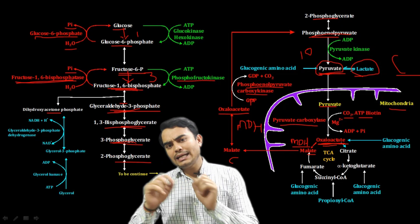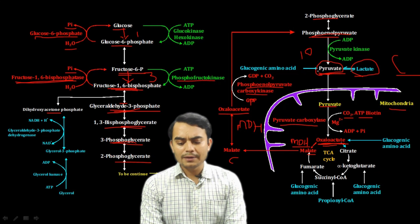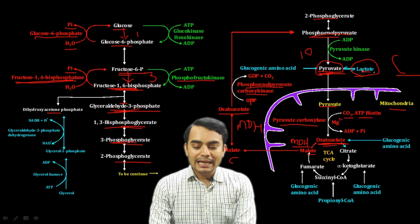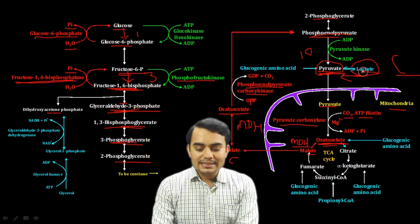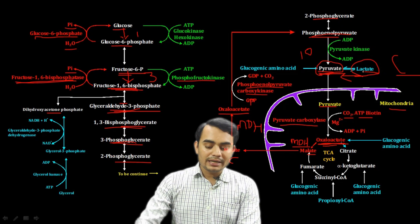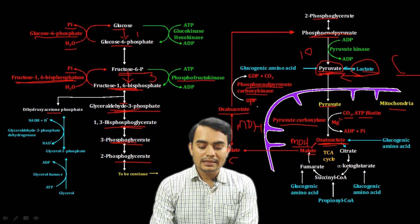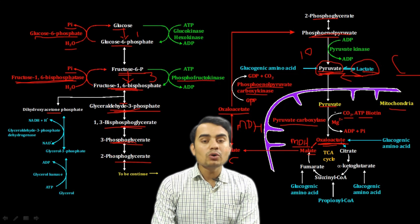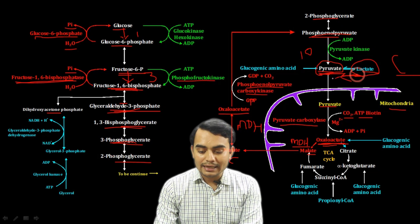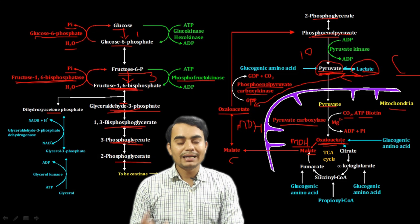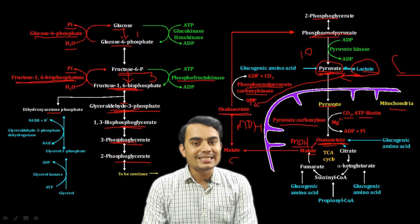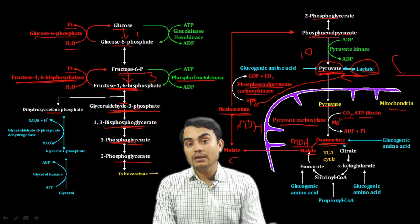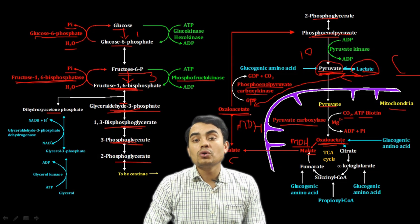If lactate is the starting substrate, there are two possible pathways. First, lactate can be converted to pyruvate (a reversible step), and then the same pyruvate pathway is followed. Alternatively, lactate can be directly converted to oxaloacetate by lactate dehydrogenase enzyme, and then the process continues from oxaloacetate.